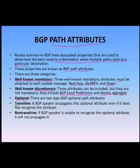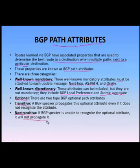With transitive attributes, a BGP speaker propagates the attribute across even if it doesn't recognize it. With non-transitive attributes, if the BGP speaker is unable to recognize it, it will not pass it on to the other peer.